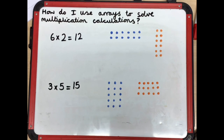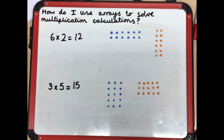Look at the questions you've got. Choose the hot, spicy, or sizzling calculations and solve them in the same way that I have. You could also write the repeated addition for each array — try to do five.